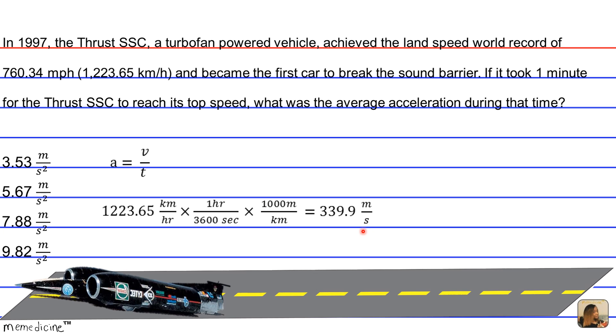So now we can take the value in meters per second and plug it into our initial formula. 339.9 meters per second divided by 60 seconds is going to be 5.67 meters per second squared. And that answer choice is answer choice B.